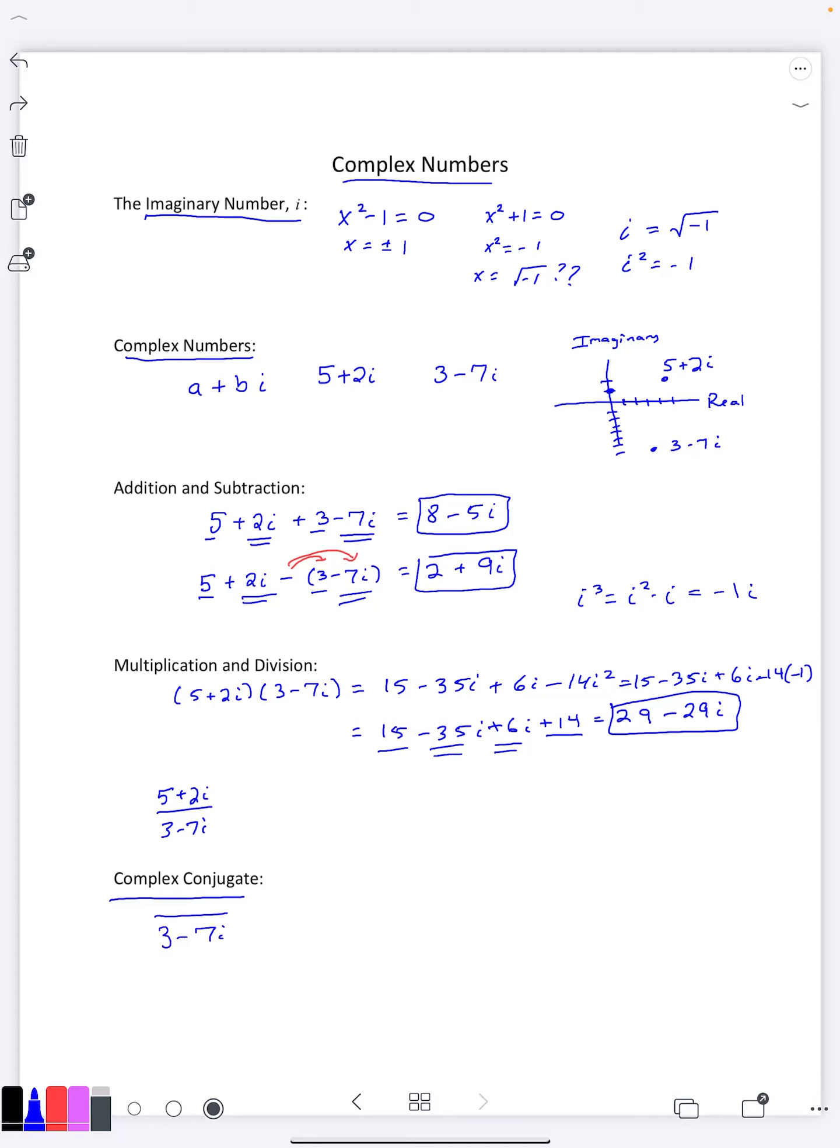Is if you want the conjugate of 3 - 7i, you just change the i part from plus to minus. Or in this case, from minus to plus. So the conjugate of 3 - 7i is 3 + 7i. If I wanted the conjugate of 5 + 2i, it would be 5 - 2i. You just change the sign on the i part. And so the general rule is if you have a + bi, it becomes a - bi. That becomes the complex conjugate.